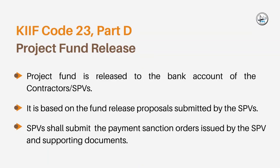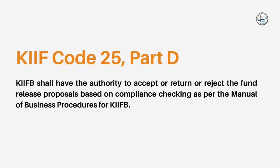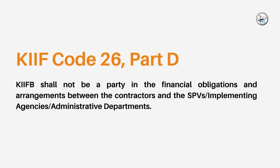As per Code 23, Part D, project funds shall be released to the bank accounts of the actual beneficiaries, i.e., contractors and SPVs, based on the Fund Release Proposals submitted by the SPVs. SPVs shall submit the Payment Sanction Orders and Supporting Documents as mandated by the Manual on Fund Release. As per Code 25, Part D, KIF-B shall have the authority to accept, return, or reject the Fund Release Proposals based on compliance checking as per the Manual of Business Procedures. As per Code 26, Part D, KIF-B shall not be a party in the financial obligations and arrangements between the contractors and the SPVs or implementing agencies or administrative departments.